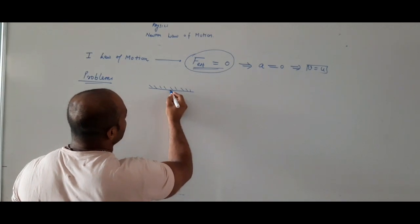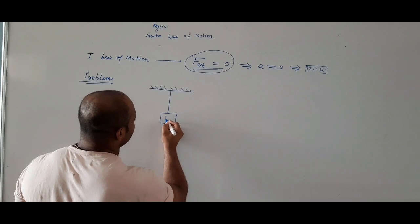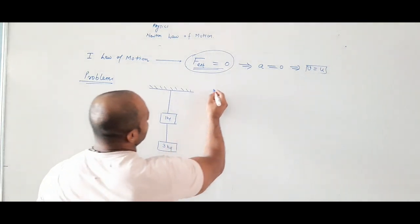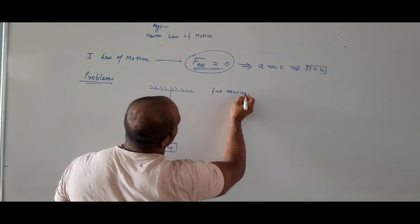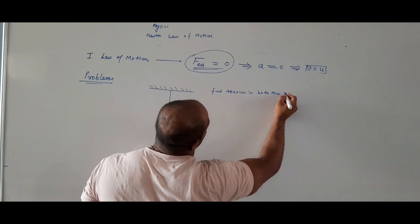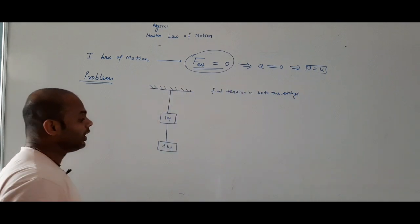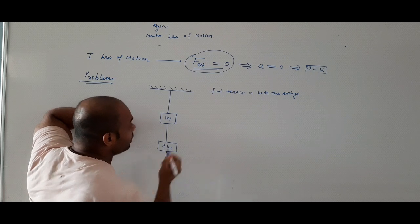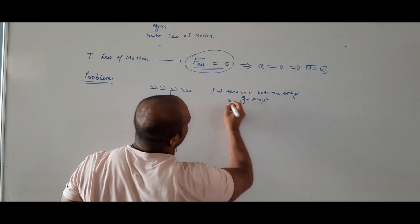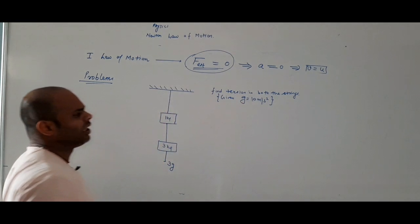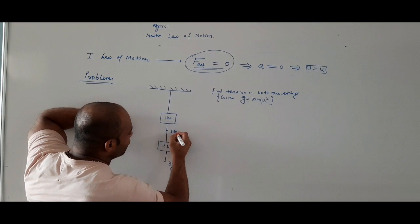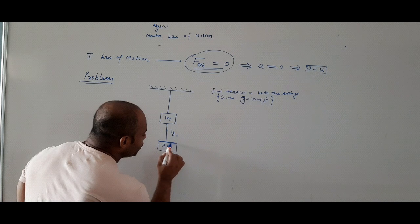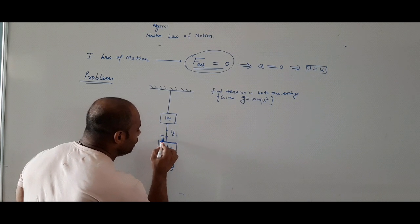Ab hamari pehli problem. Suppose there is a wall, and a string is attached to it holding a mass of 1 kg. Below that, another string holds a mass of 3 kg. The question is: find the tension in both the strings.